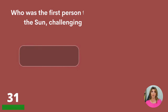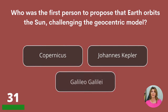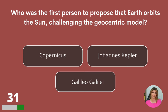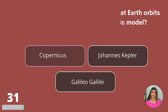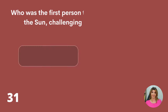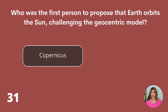Question 31. Who was the first person to propose that Earth orbits the Sun, challenging the geocentric model? Copernicus, Johannes Kepler, or Galileo? Copernicus.